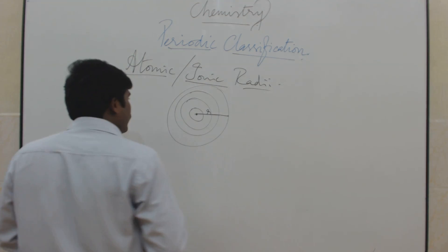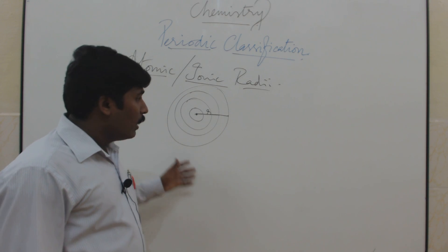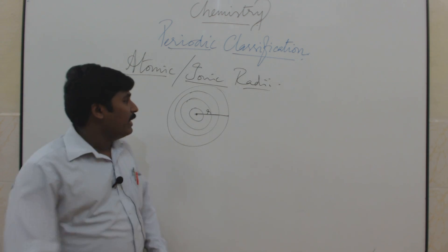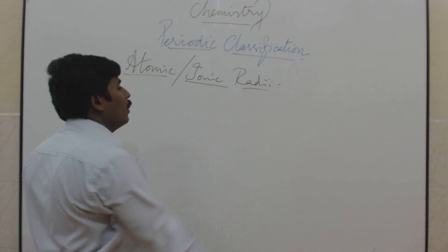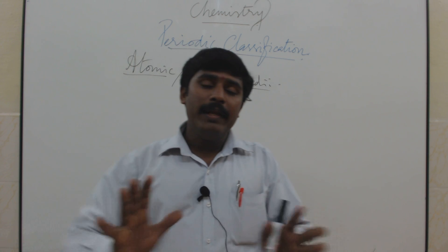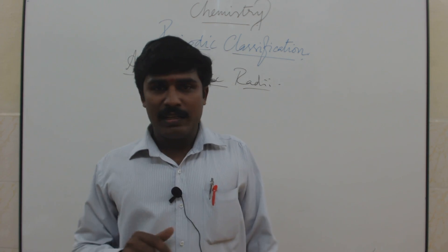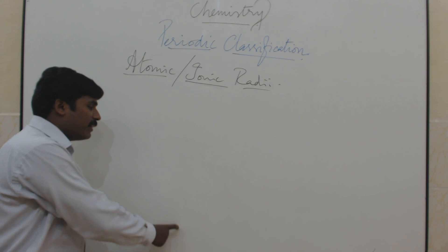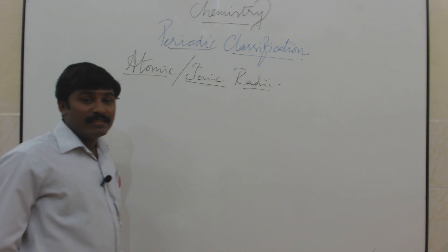Now, what happens to atomic radius going down a group and across a period? Atomic radius going down the group increases; going across a period it decreases. Commonly, as atomic number increases, atomic size also increases — but in a group the size increases, while in a period the atomic size decreases.